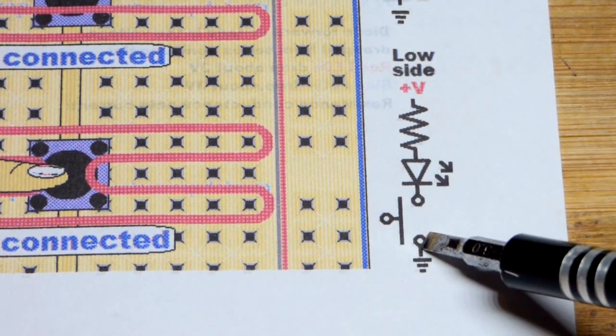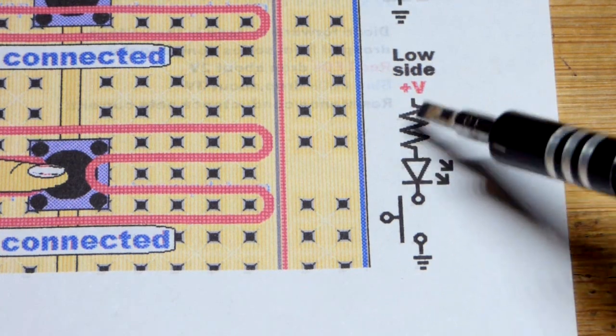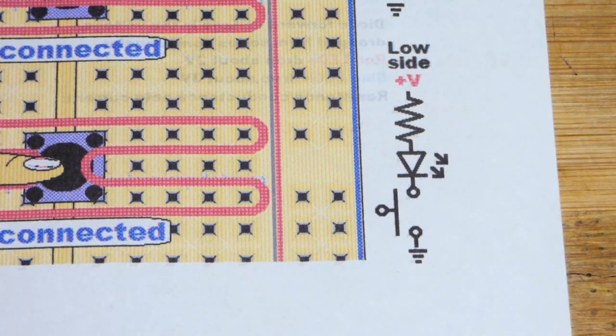We could put the LED down there, the switch in the middle, or put the LED before the resistor, and it'll work the same.